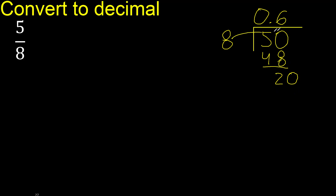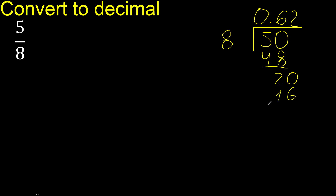Bring down: 20. 8 multiplied by 3 is 24 — excessive. 8 multiplied by 2 is 16; subtract, remainder is 4. Complete with 0.